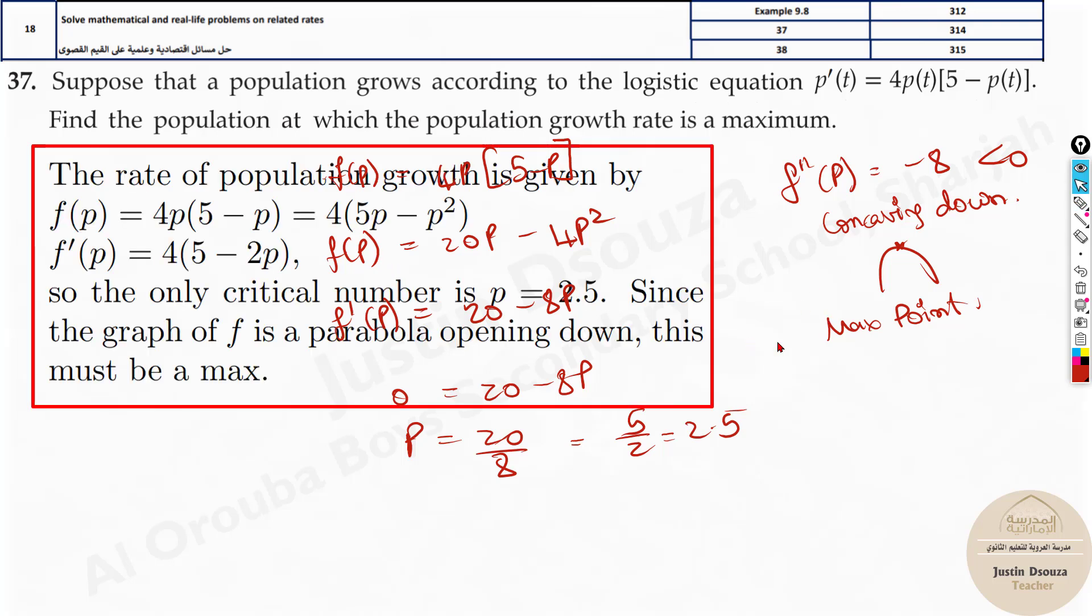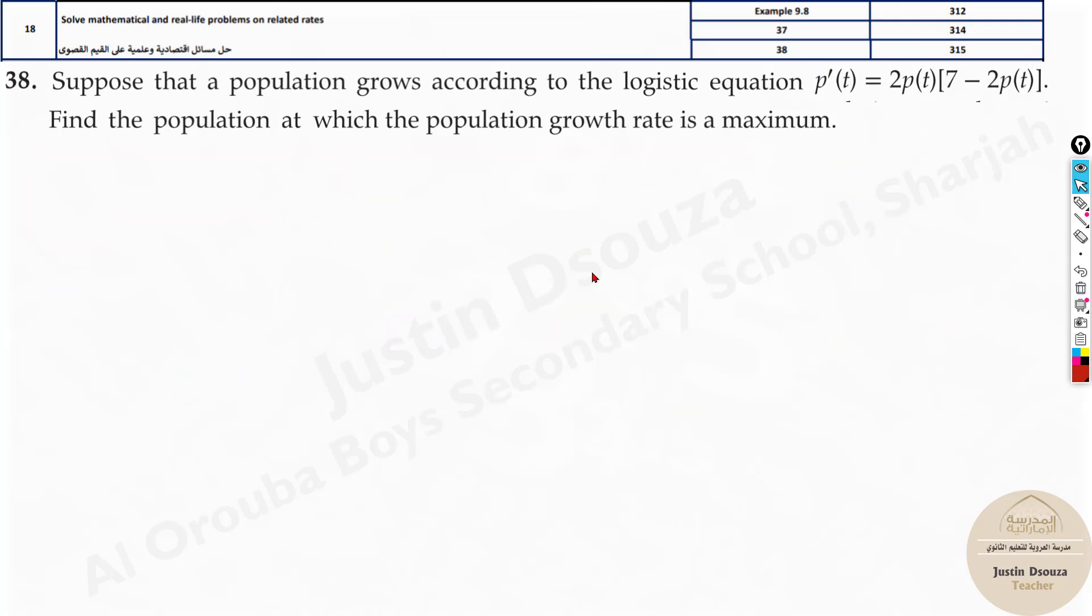And you can see over here also, they have not done the graphs. They have done different methods. They have just told it's opening downwards. Yes, basically, you can easily do the double derivative test and prove it to be maximum.